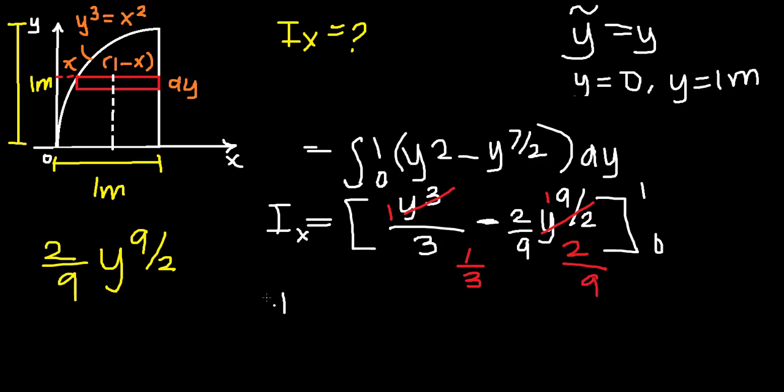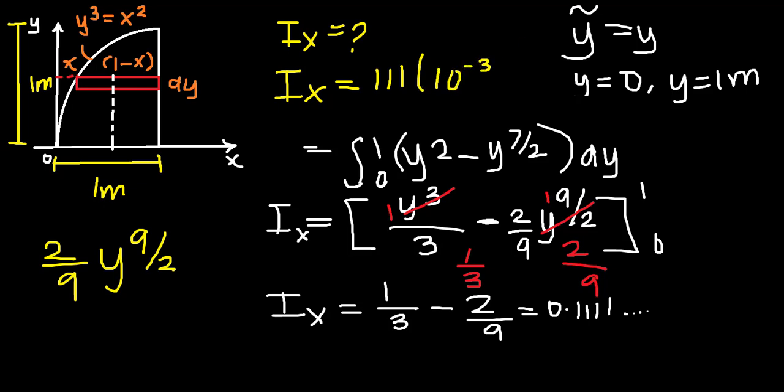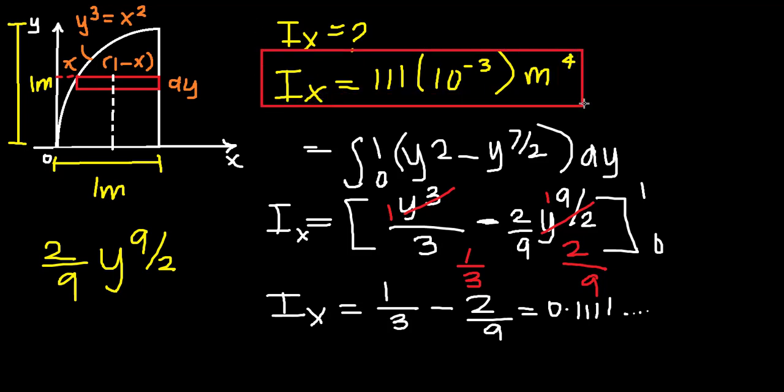So if we write that, final answer: 1/3 minus 2/9, which is 3/9 minus 2/9, equals 1/9, which is simply equal to 0.1111. So we could say that our Ix can also be written in scientific notation as 1.11×10⁻¹ m⁴. And that is our final answer.